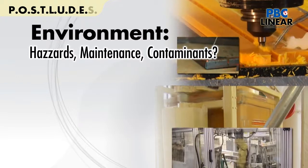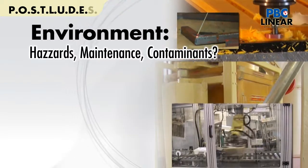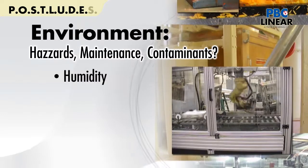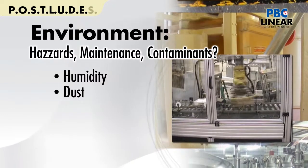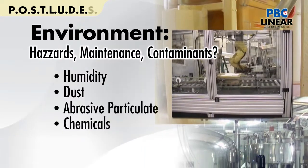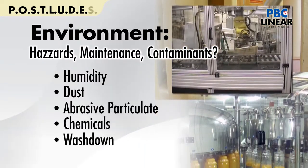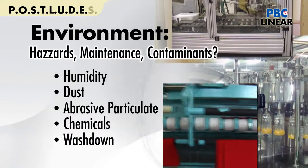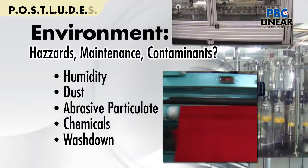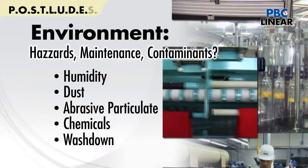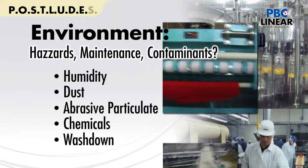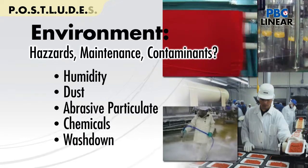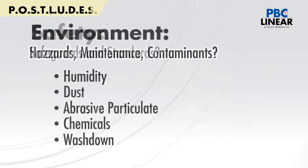E is for environment. Consider the environment the product will be within, such as humid, dust, abrasive dust, chemical, wash down, etc. Environment includes all of the external factors influencing the life of the product, including maintenance and its frequency. The environment will surely influence which product is best for the situation.